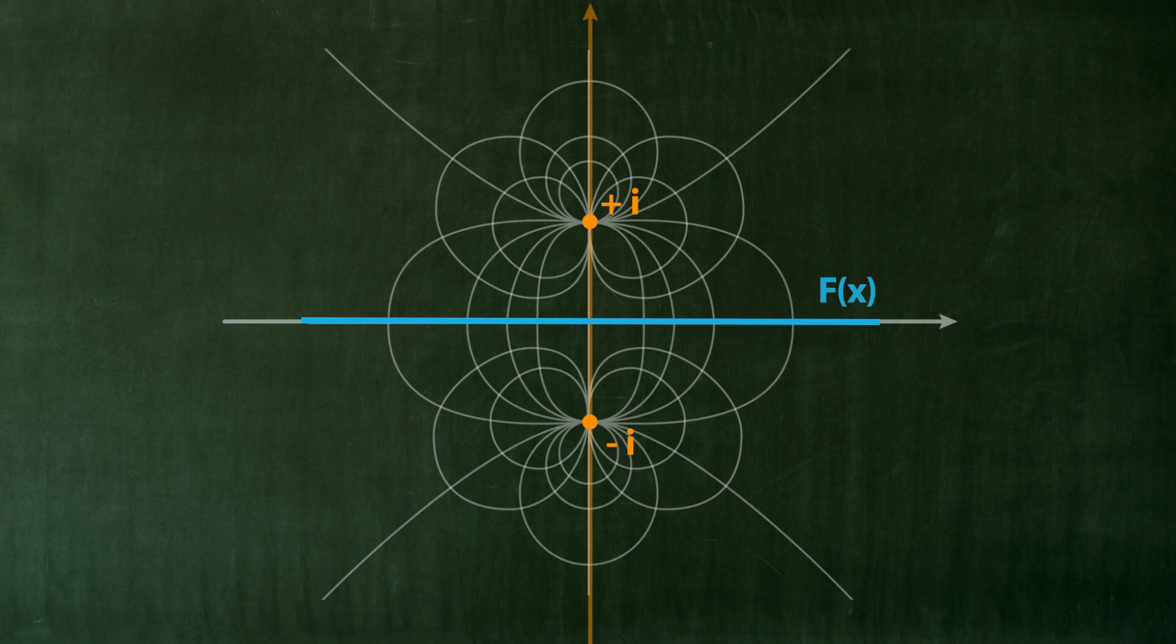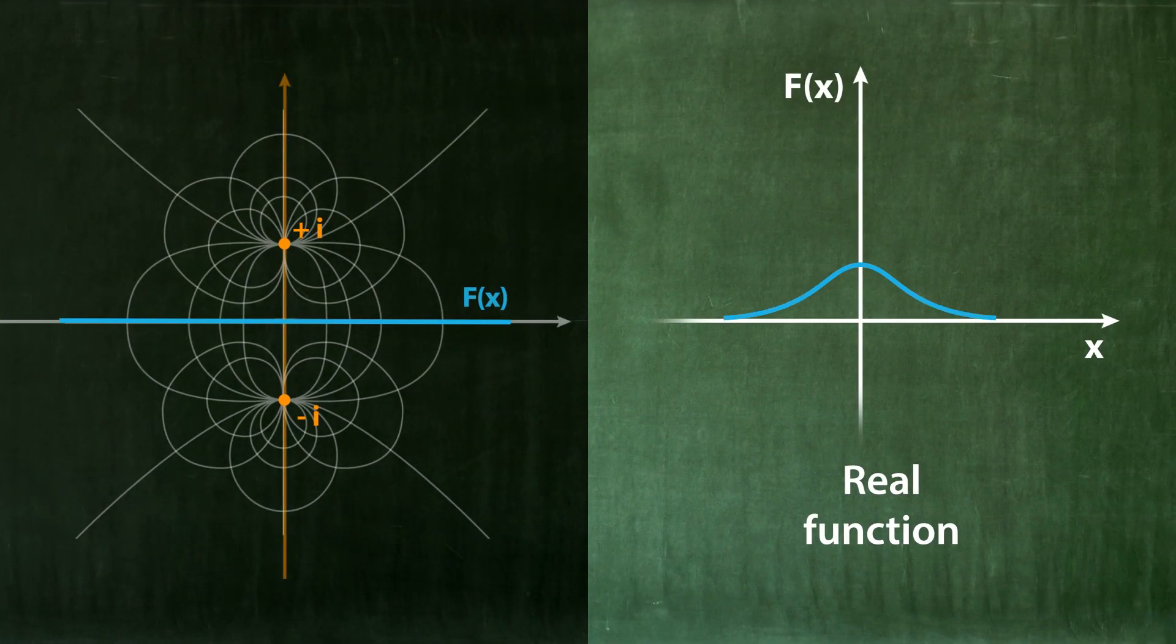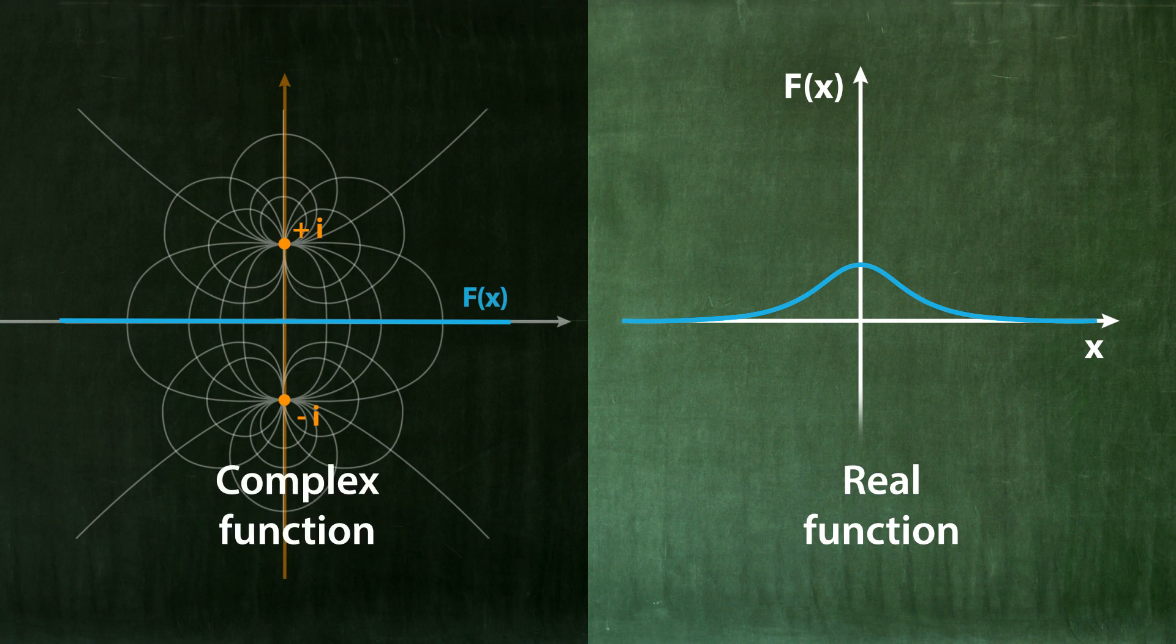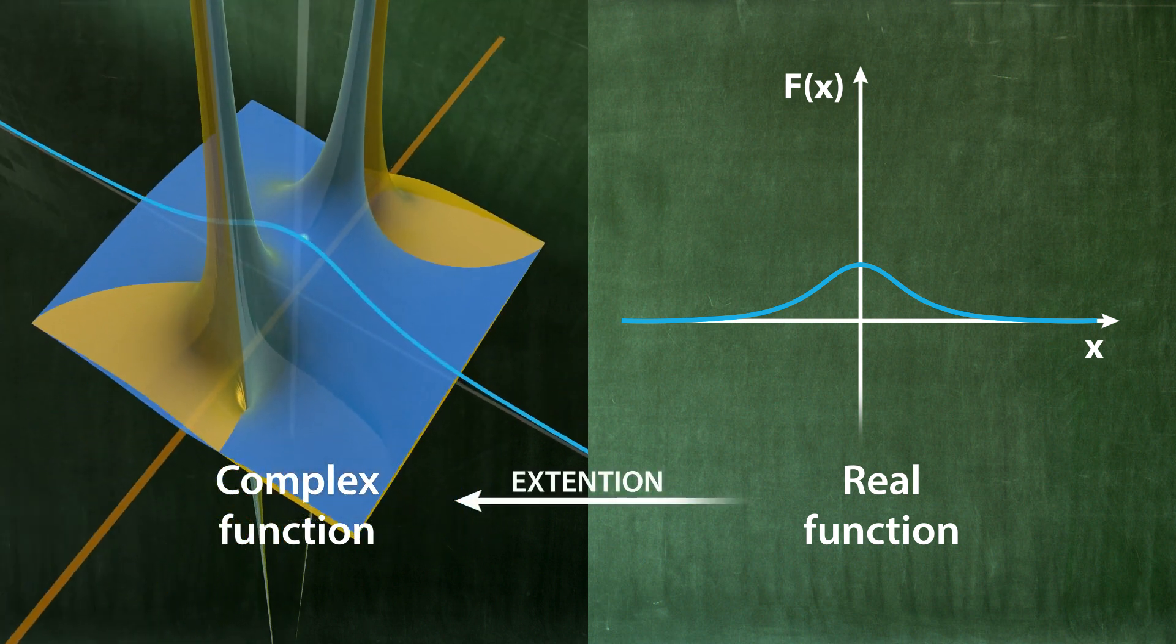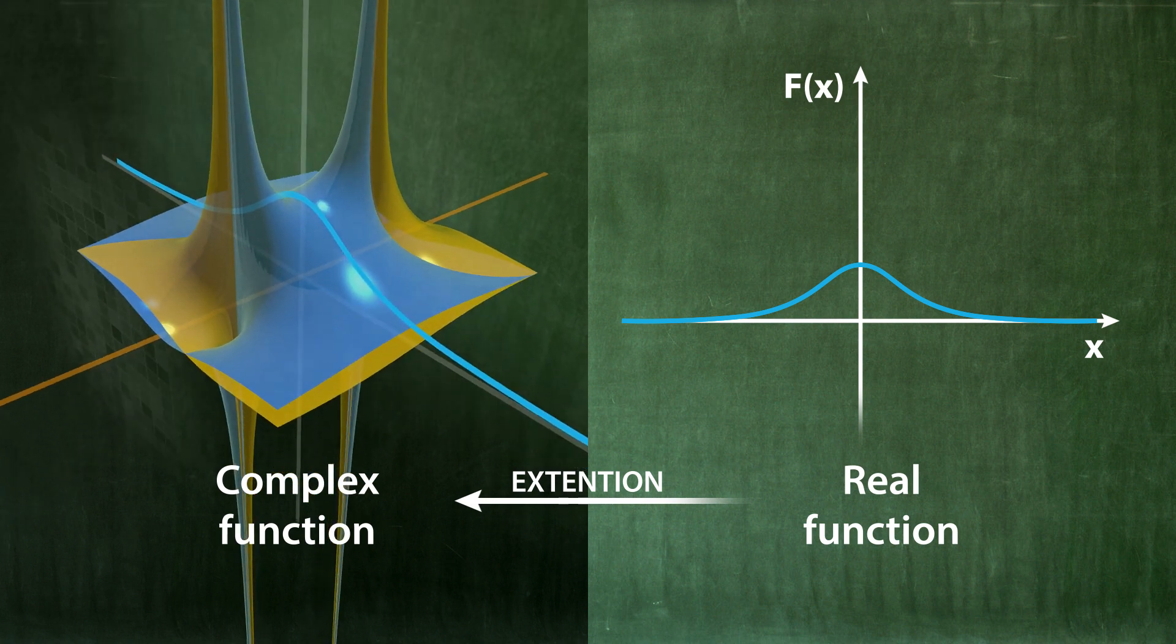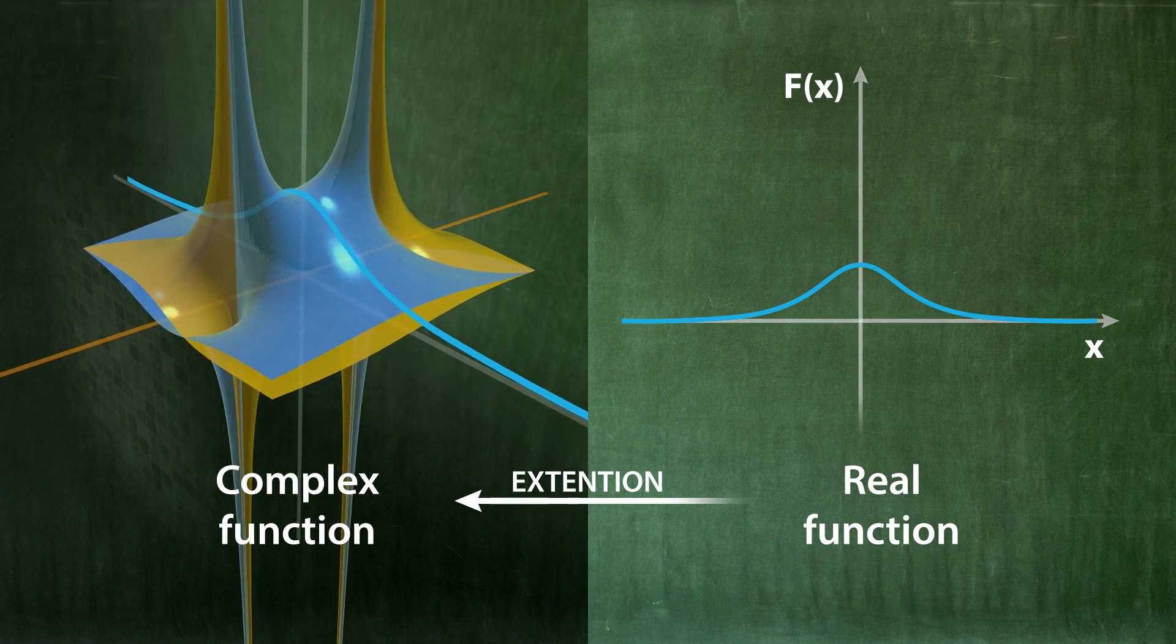And the entire complex structure is already determined by the function f of x on the real axis. Even if the deeper structure is somewhat concealed here, in particular that of the singularities. This complex extension of the function f of x helps us to understand this deeper structure much better.